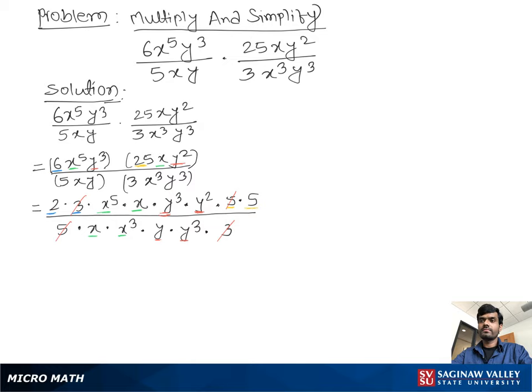The 3's cancel out, the 5's cancel out, then we have 2 left. For like terms, when we multiply we add the powers, so we can write 2 times 5 times x^6 times y^5 over x^4 times y^4.